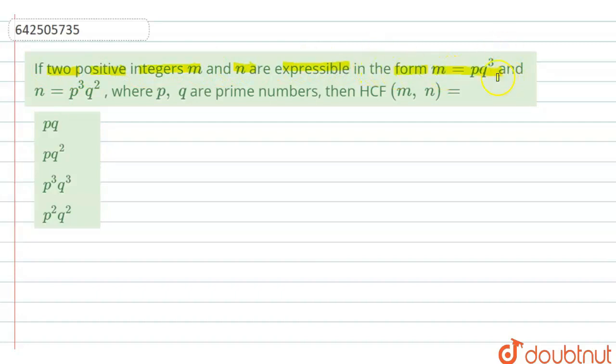and N is equal to P raised to 3 Q raised to 2, where P and Q are prime numbers,